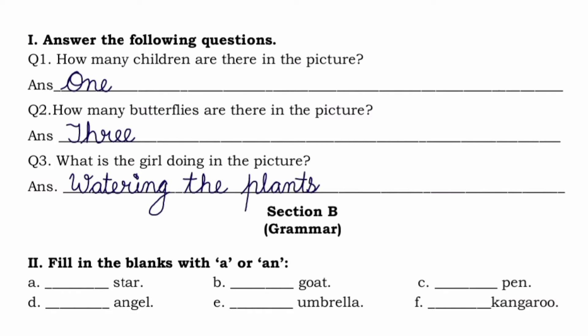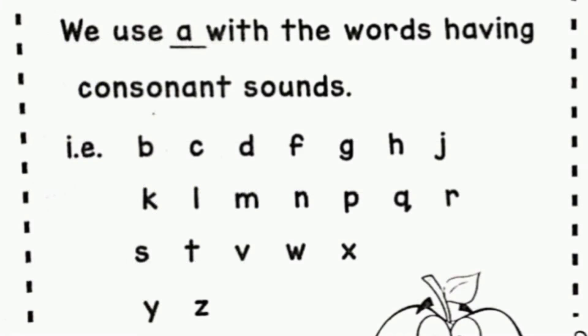Now let's move to Section B, which is of grammar. In this section, the questions will be asked from the chapter on articles. So let's quickly revise articles. When do we use 'a'? We use 'a' with words having consonant sounds. For example: a bat, a hat, a tap.